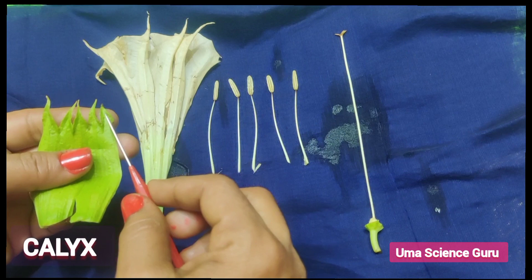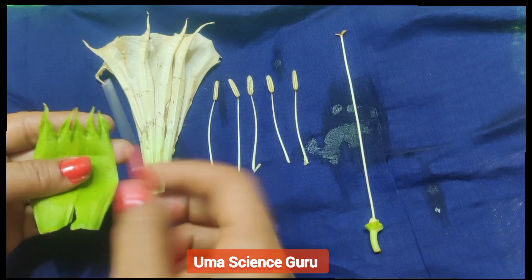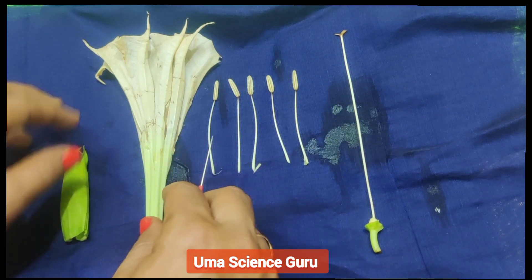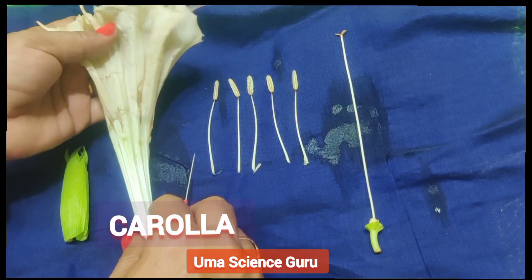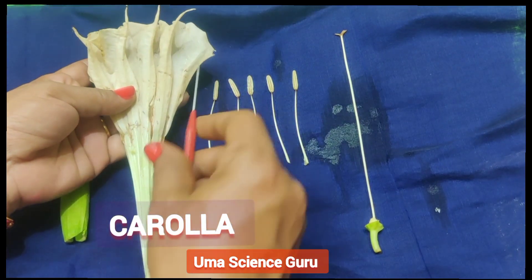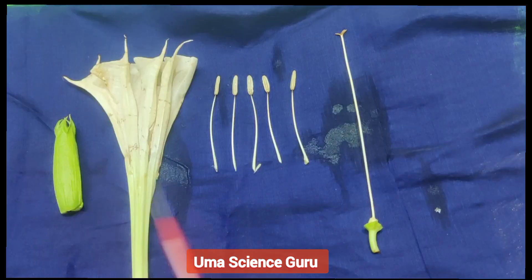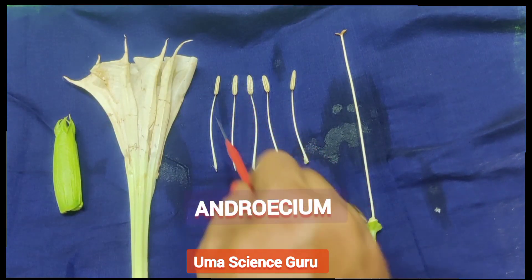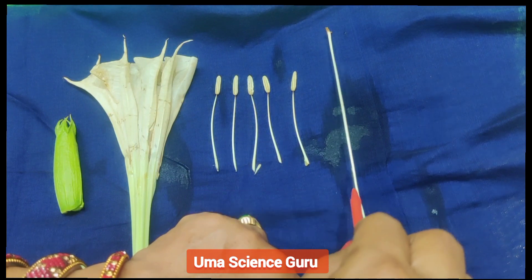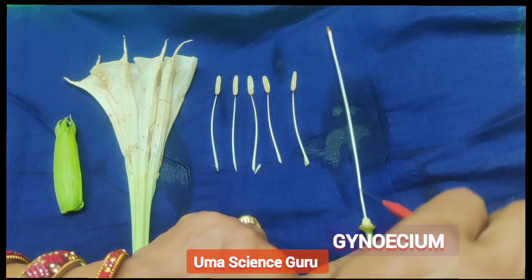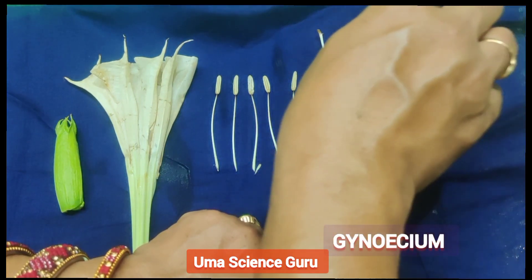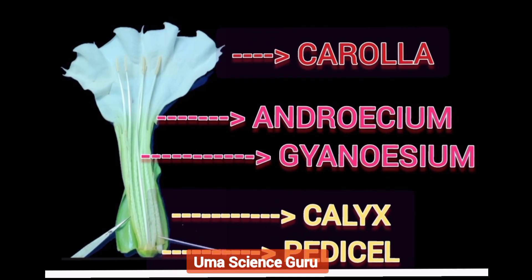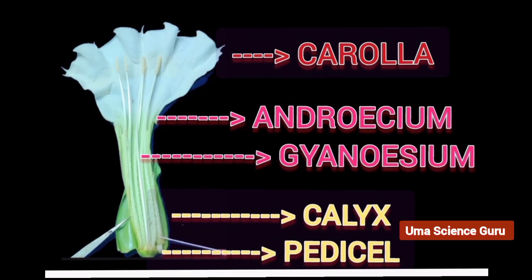Students, observe the four whorls: the outer whorl, calyx, with five sepals; the second whorl, corolla, with five petals; the third whorl, androecium, with five stamens; and the fourth whorl, gynoecium or pistil, with three parts. I think that you got a clear idea about the structure of a flower. You collect some flowers from your surroundings and separate these four structures. Thank you.